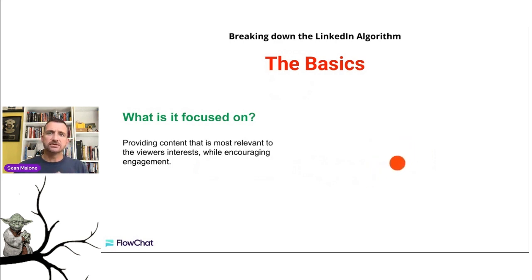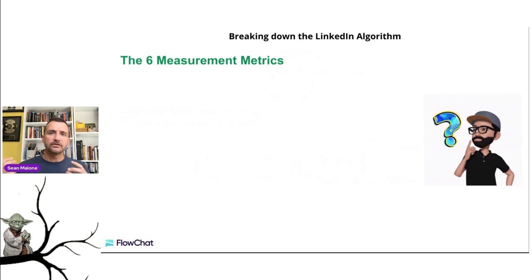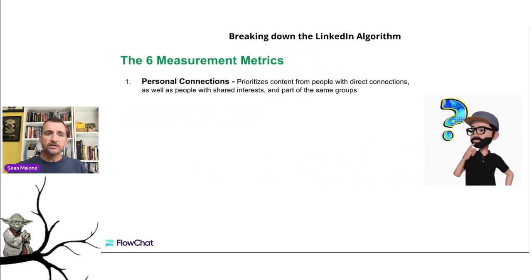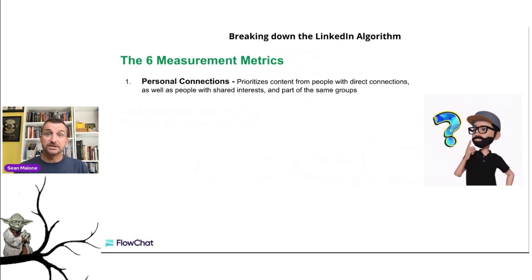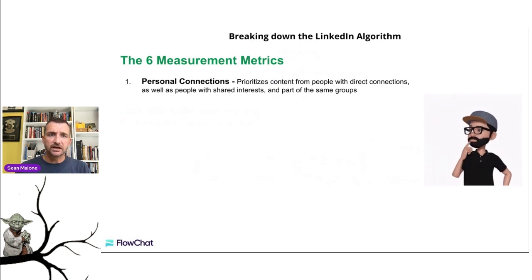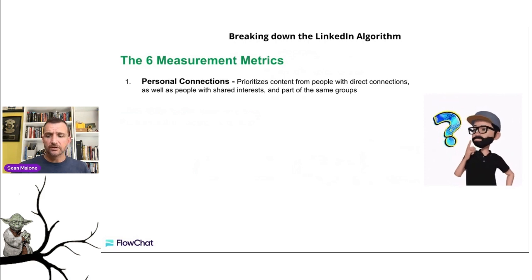You don't want to be salesy. One of the things the algorithm looks for is feedback, so we don't want to be too salesy, but we do want to have some sort of a call to action. These are the six things the algorithm actually measures. Number one: are you personally connected to the person you're working to sell to or connect with? The algorithm prioritizes content from people with direct connections, as well as if you have shared interests — maybe you're part of the same groups or comment on the same posts.